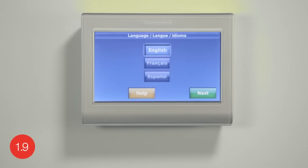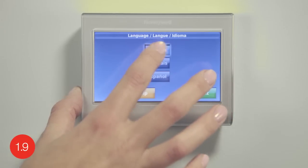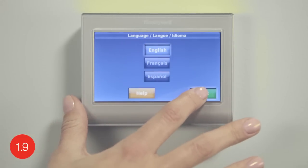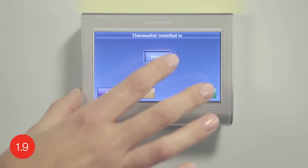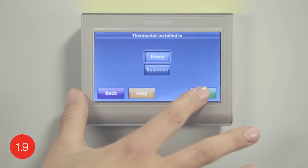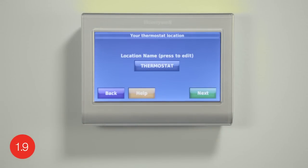Begin by selecting the language to be displayed on the thermostat and press next to continue. If at any time you need assistance, simply select help for more details. Choose either home or business - this optimizes the terminology and preset schedule for either installation situation. Continue by selecting next.